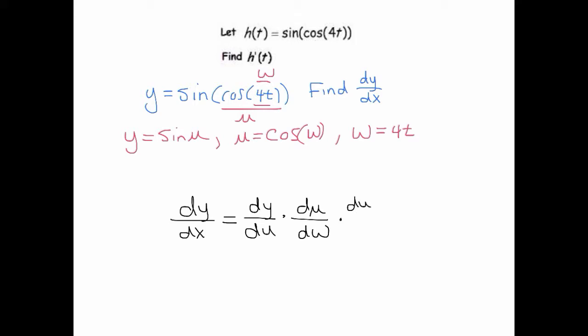And then the final relationship is between w and t, times dw/dt. Notice by the way that the du's here, if you kind of view this like a fraction, would cancel, the dw's would cancel and you've got your dy/dt. Oh I should note that we're finding dy/dt, not dy/dx. There's no x in this problem.